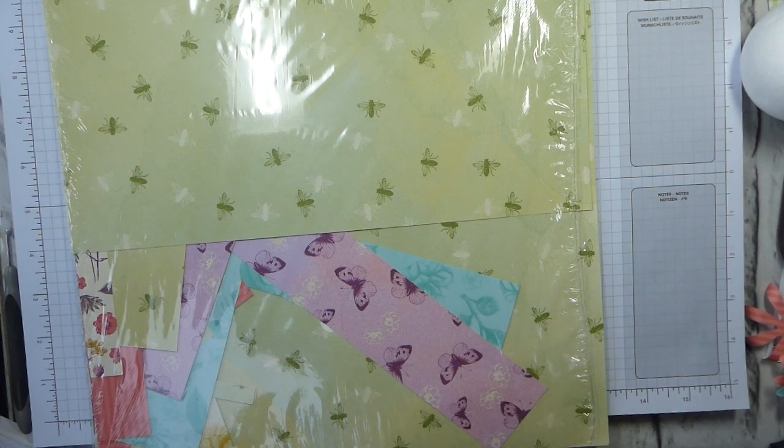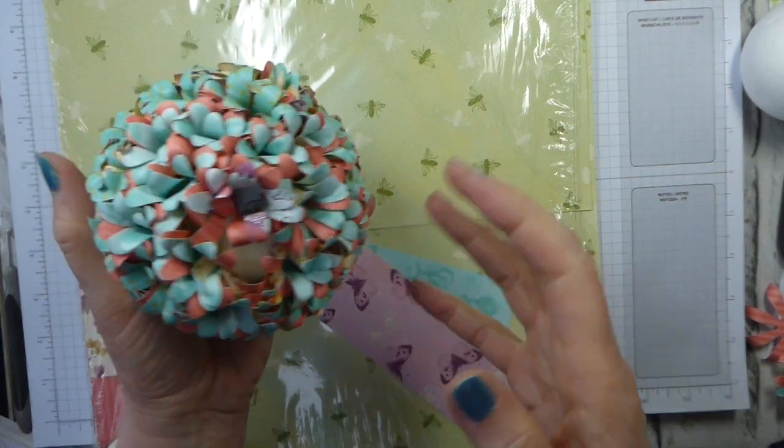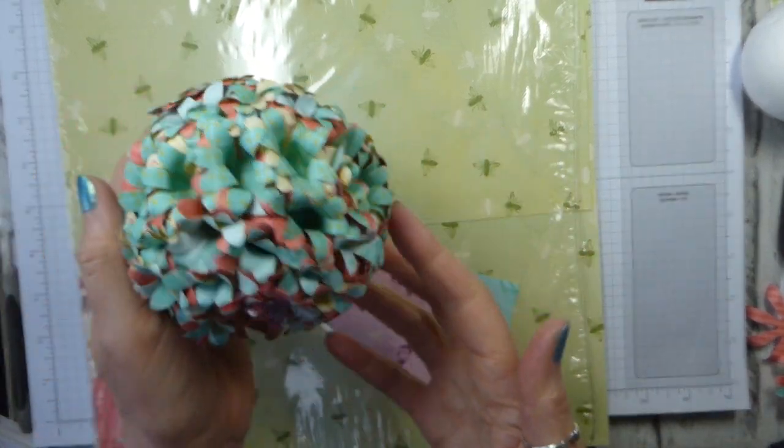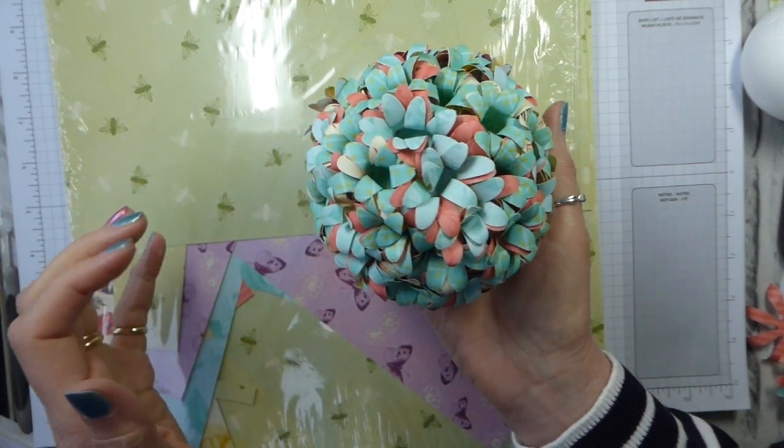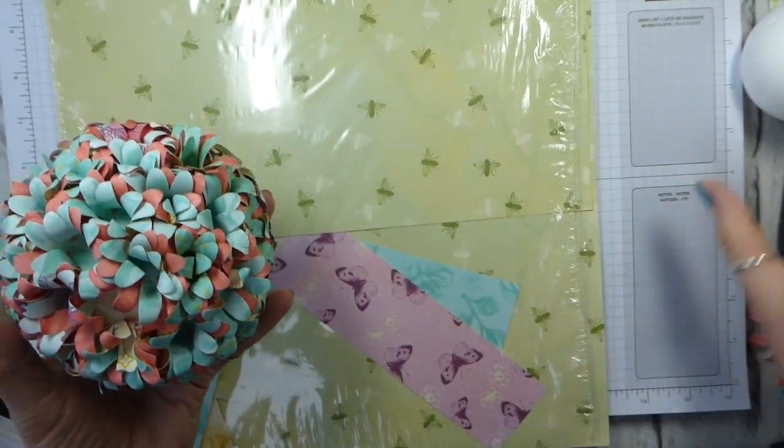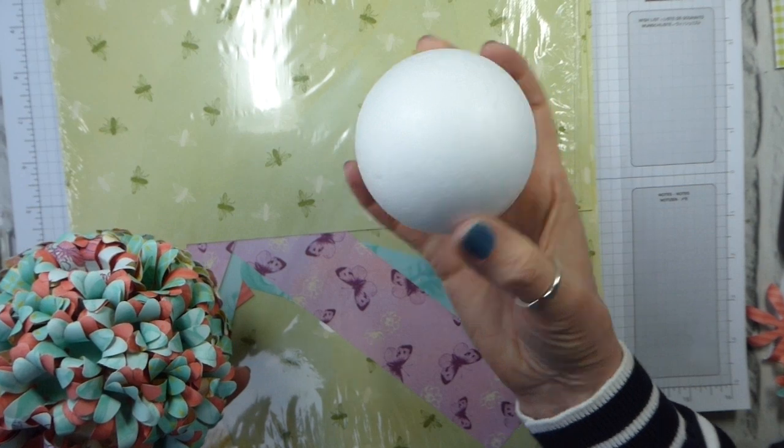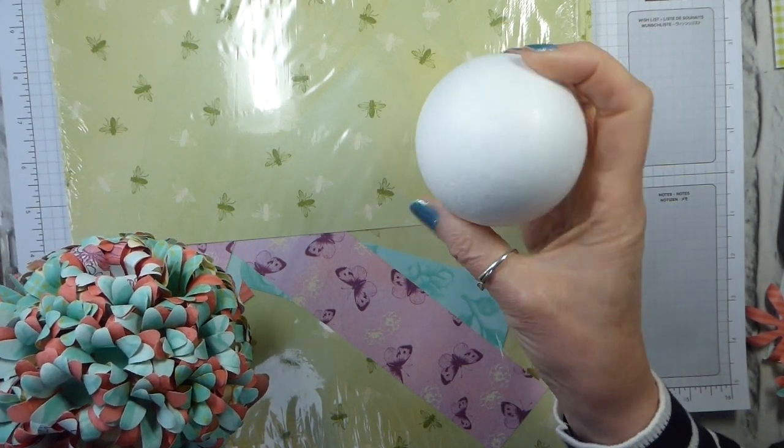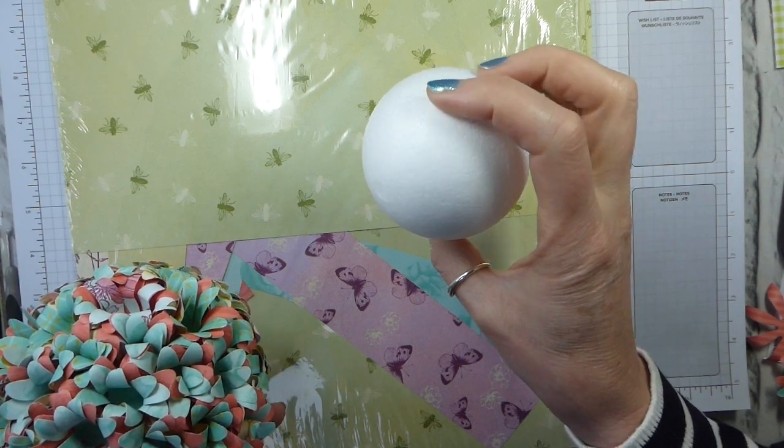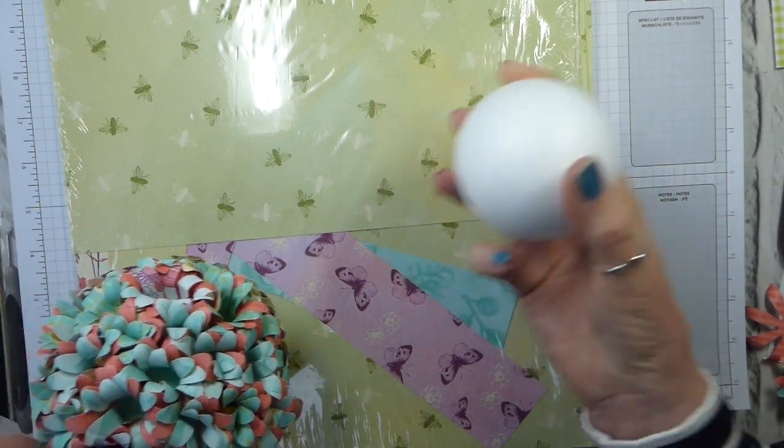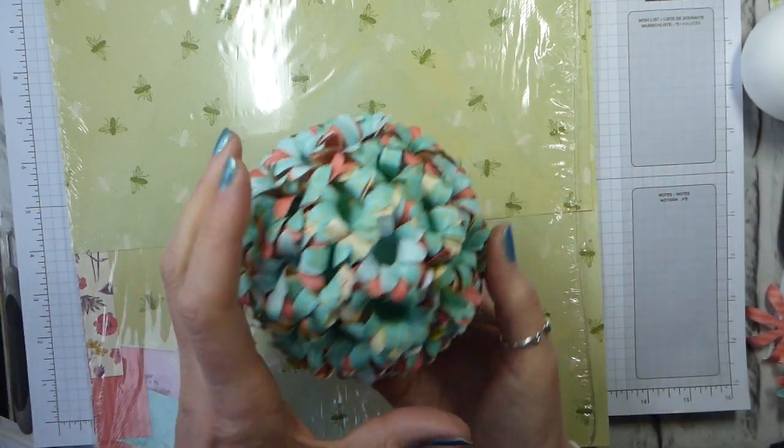So I have got a topiary for you. I haven't finished it yet. I've done a lot of work on it because it took a while, a little bit longer than I thought it might. But I thought I would show you how I made it. I started with a polystyrene ball. So simple polystyrene ball. Got these from a local discount shop and it's ended up looking like this.